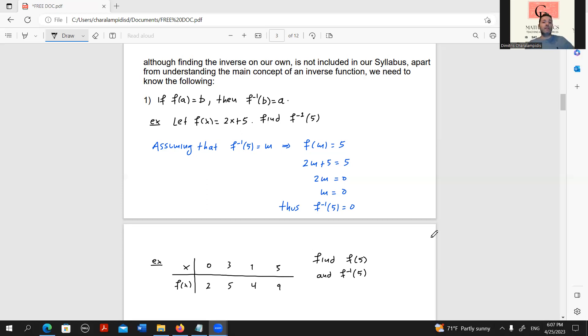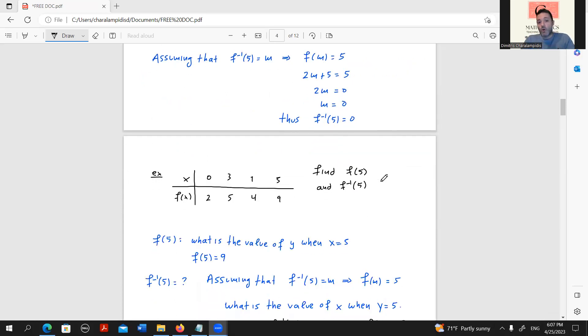We can begin by assuming, let us assume that f^(-1)(5) is equal to M. Based on this property, we can flip them and switch to f. If f^(-1)(5) is equal to M, then that would mean that f(M) is equal to 5, which means that 2M + 5 is equal to 5, which further means that 2M is equal to 0. Hence, M is equal to 0. And how did we define M? We defined it as f^(-1)(5). So we managed to find the needed value.